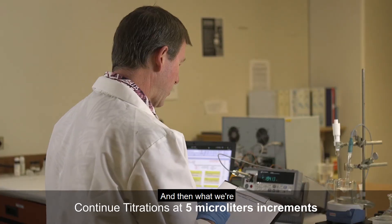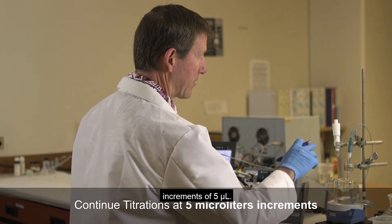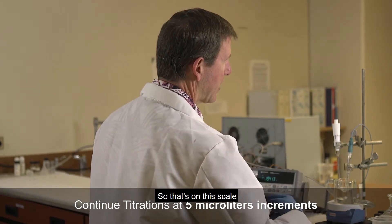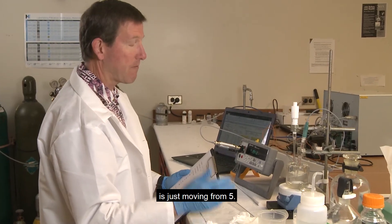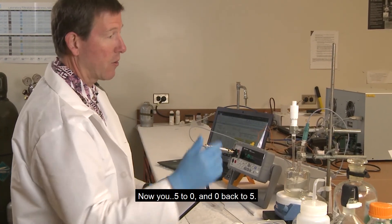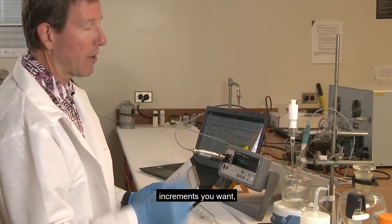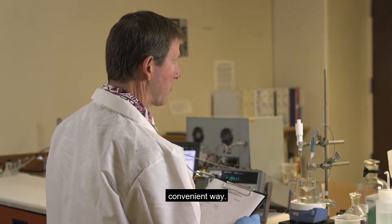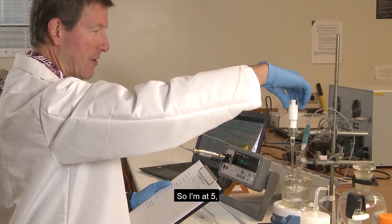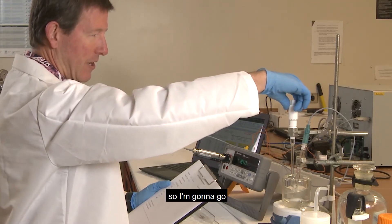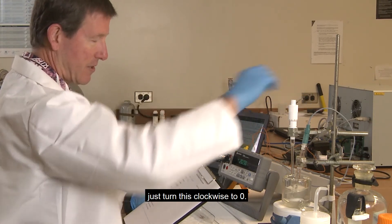And then what we're going to do is we're going to do titrations in increments of 5 microliters. So that's on this scale is just moving from 5, now 5 to 0, and 0 back to 5. You can use whatever increments you want, but I find that a nice, convenient way so I don't have to think too carefully about where I am and what I'm doing. So I'm at 5, so I'm going to go just turn this clockwise to 0.